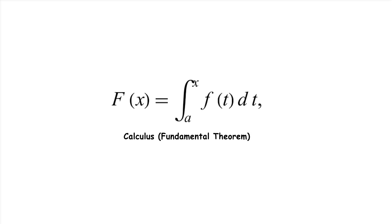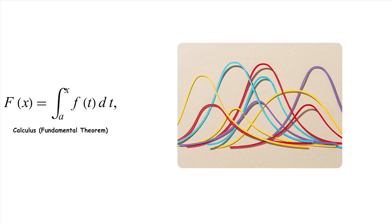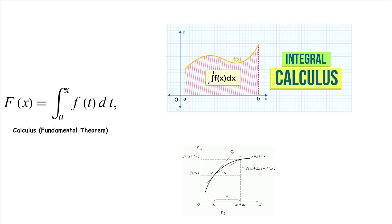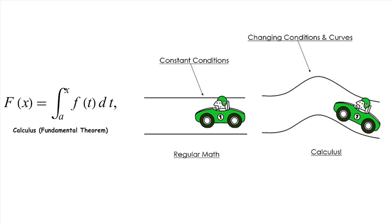Calculus fundamental theorem. Calculus is a branch of mathematics that studies how things change. The fundamental theorem of calculus links two main concepts: differentiation, which measures how a quantity changes, and integration, which measures the total accumulation of a quantity. Imagine you are driving a car. Differentiation helps you figure out your speed at any given moment, while integration helps you figure out how far you've traveled over a period of time. The fundamental theorem of calculus shows that these two ideas are connected.